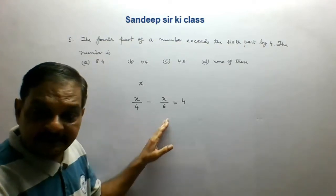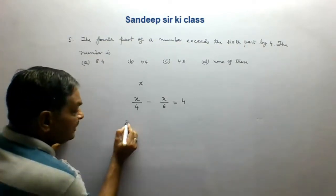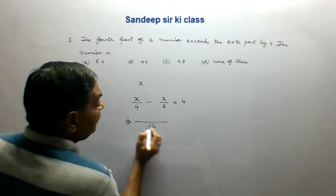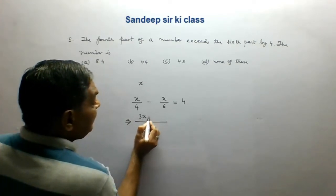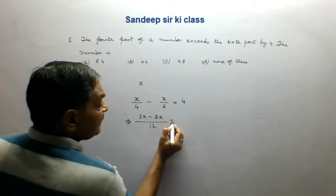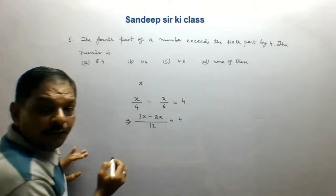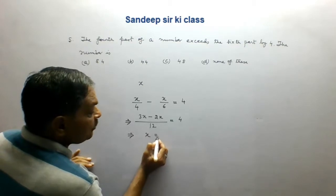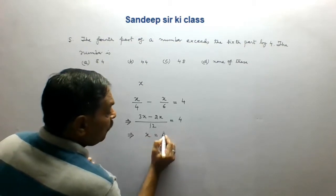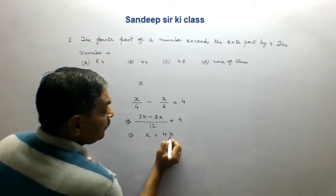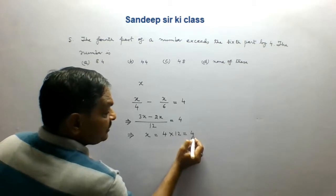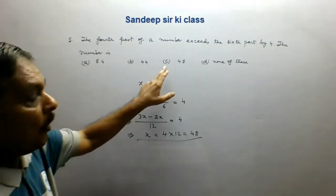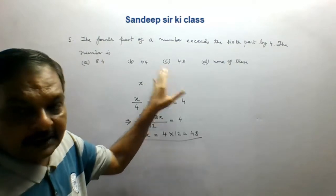Now we solve this equation for X. The LCM is 12, giving us 3X minus 2X equal to 4 into 12, which gives X equal to 48. So option C is the correct option.